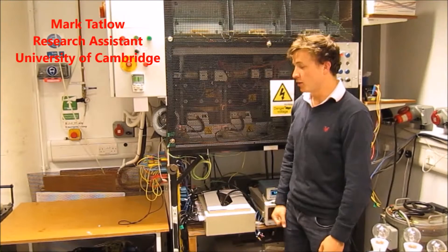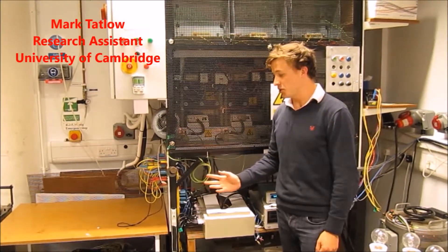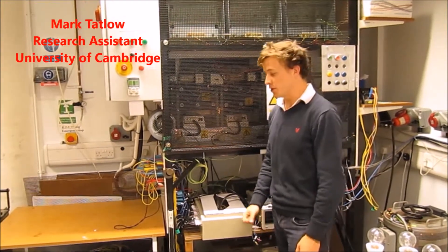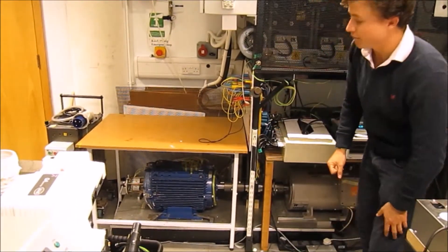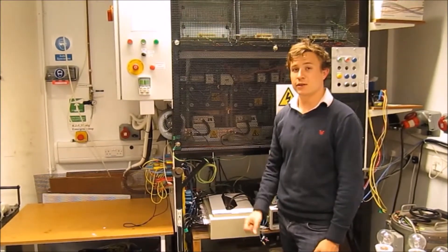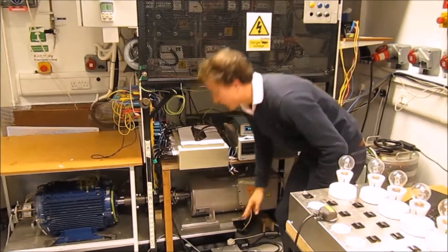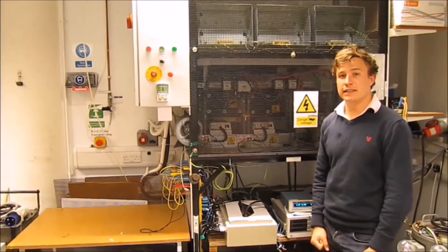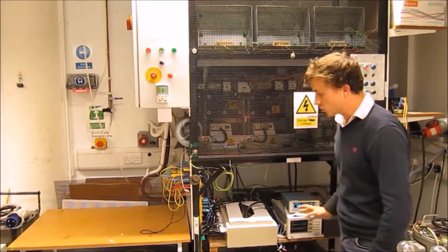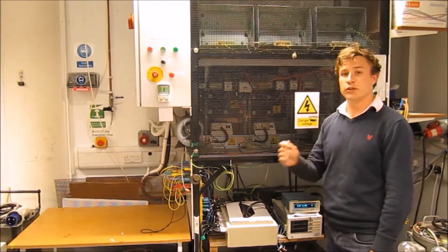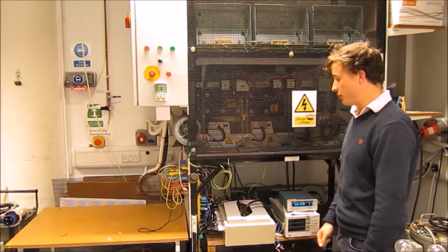So this is our brushless DFIG test rig at the University of Cambridge. On the left here, this blue machine is a 48-pole, 8 kilowatt brushless DFIG, and that is coupled to the gray machine here, which is a conventional DC machine which is used as the drive for the test rig and simulates the rotating blades of the wind turbine.